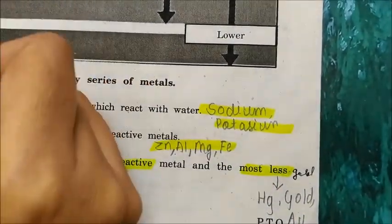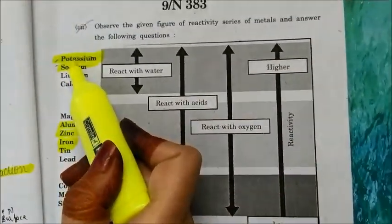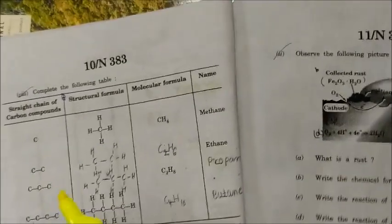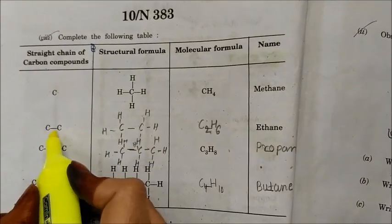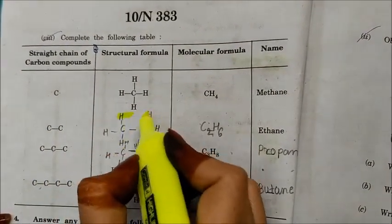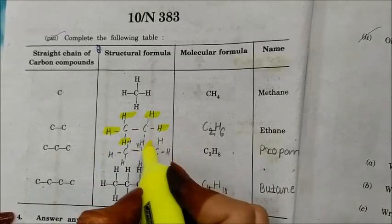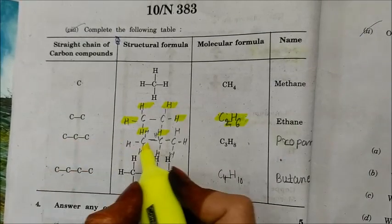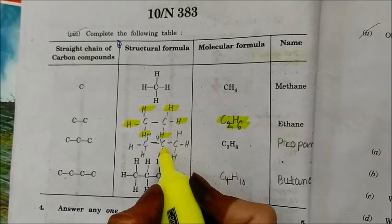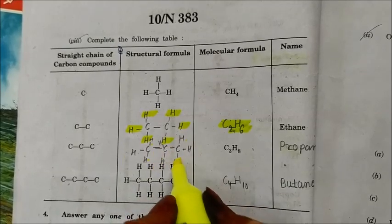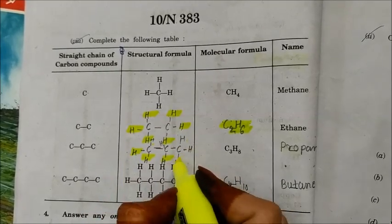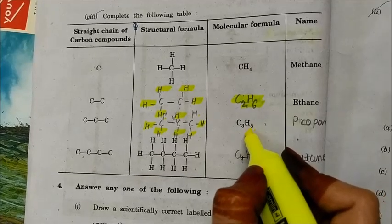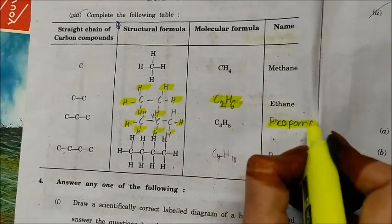Complete the following table. C–C single bond with hydrogens: C₂H₆ is ethane. C–C–C single bond with hydrogens: C₃H₈ has eight atoms of hydrogen and three atoms of carbon — it is propane.